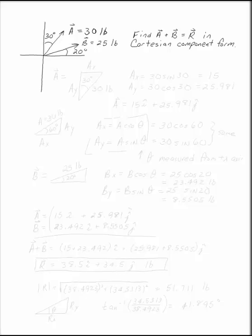Find the resultant of A and B in Cartesian component form. A is 30 pounds at 30 degrees to the vertical. B is 25 pounds at 20 degrees above the horizontal.